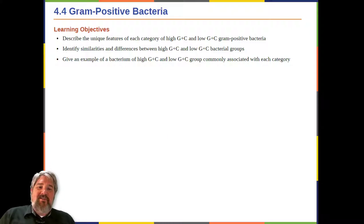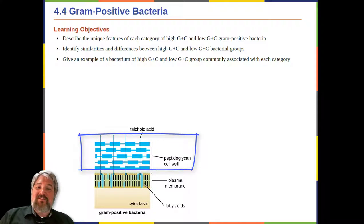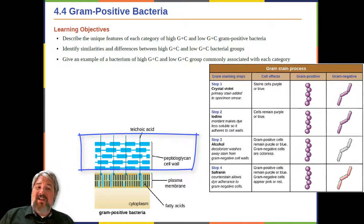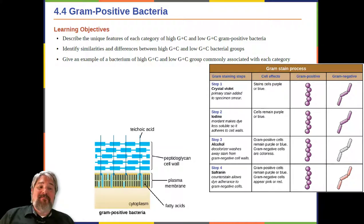Prokaryotes are identified as Gram-positive if they have a multiple-layer matrix of peptidoglycan forming the cell wall. Crystal violet, the primary stain of the Gram-stain procedure, is readily retained and stabilized within this matrix, causing Gram-positive prokaryotes to appear purple under a bright field microscope after Gram-staining.